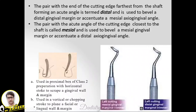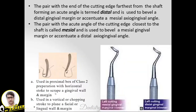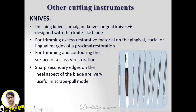The pair where the cutting edge farthest from the shaft forms an angle is termed distal, used to bevel the distal marginal or accentuate a mesial axio-gingival line angle. The pair where the acute angle of the cutting edge is closest to the shaft is mesial, used to bevel the mesial gingival margin or accentuate the distal axio-gingival angle. It is used in proximal walls of cluster preparation with horizontal strokes to scrape the gingival wall and margin, and in vertical or chopping strokes on facial or lingual walls.